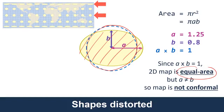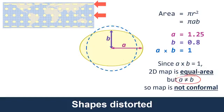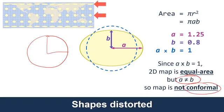How do we know the shapes will be different? Because A is not equal to B anymore. On our original circle, A equals B — that makes sense because it's a circle. But as soon as A and B are different, it can't be a circle anymore. If it's not a circle, the shape has been distorted. And if the shape has been distorted, then it can't be conformal. Conformal means that if a map is conformal, the shapes have been maintained — Greenland still looks like Greenland. Here the areas are correct but the shapes are not.